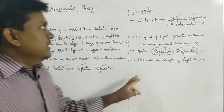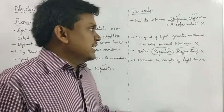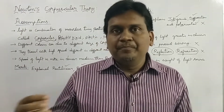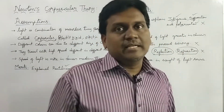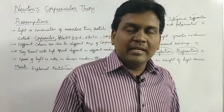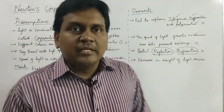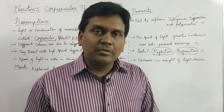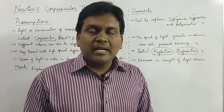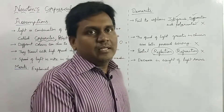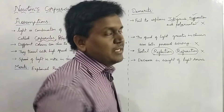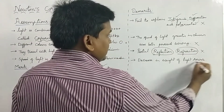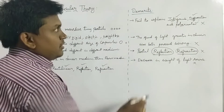Coming to another demerit: decrease in weight of the light source. What he said is that whatever source of light is there, when it emits light the weight of the source will decrease. This is also failed — that means, for example, if a tube light is giving light to us, after using it for some time, its mass or weight is stated to be decreasing. So this is also a demerit of Newton's corpuscular theory.